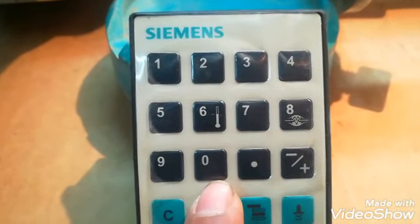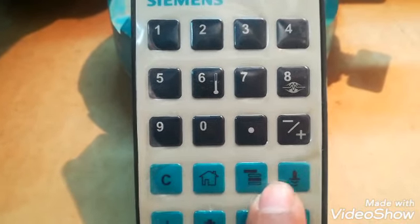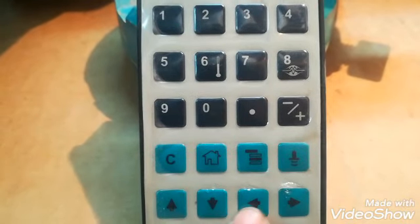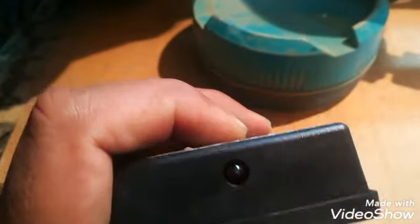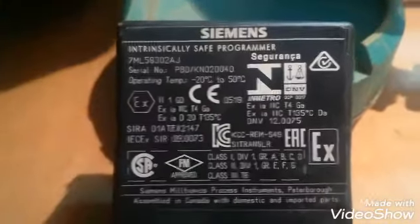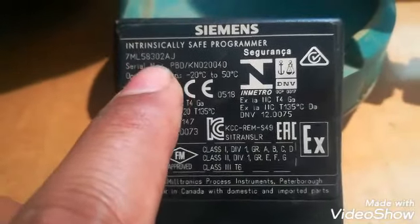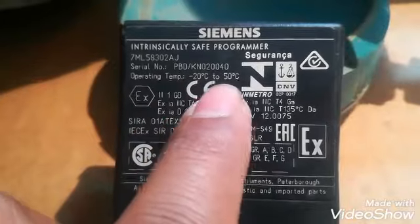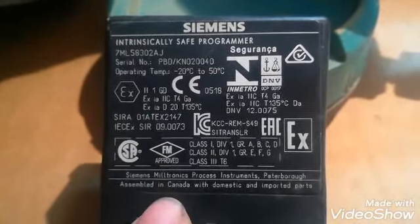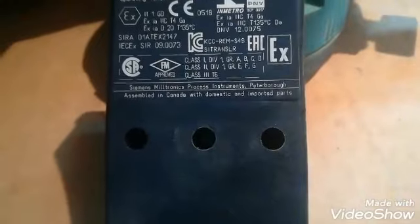This is its programmer. As you can see it has different buttons. Mostly the left right and up down buttons are used for programming. This is a remote type, non-contact type programmer. From a distance we can give program to the transmitter. Here you can see Siemens intrinsically safe programmer. Its model is 7ML5830-2AJ. The serial number you can see, and the different specs of this programmer are written here.